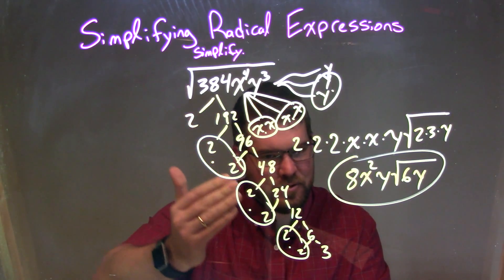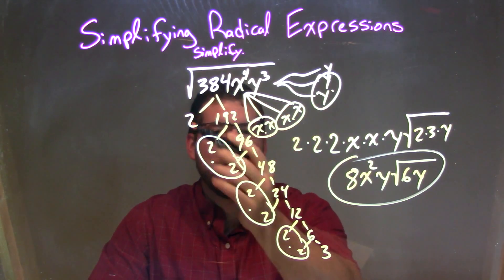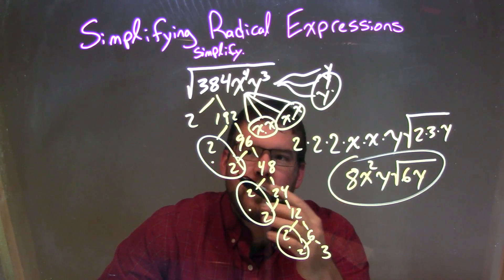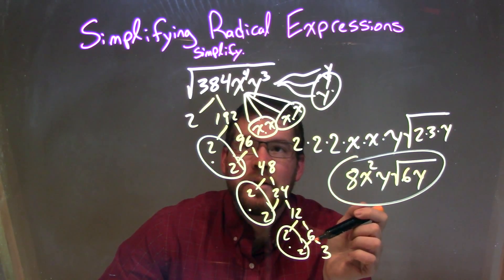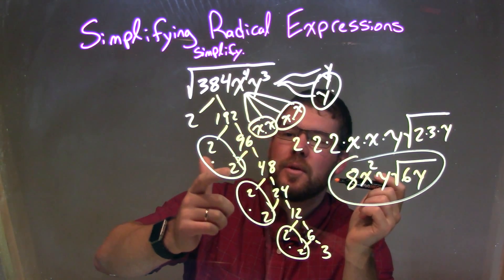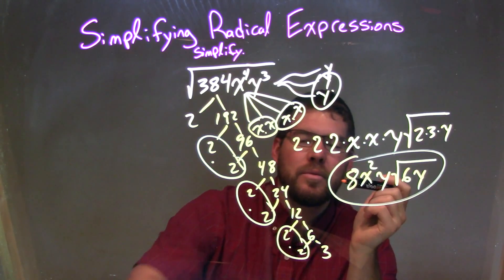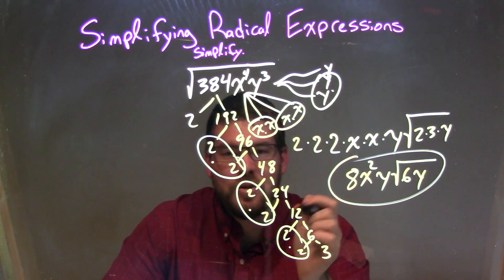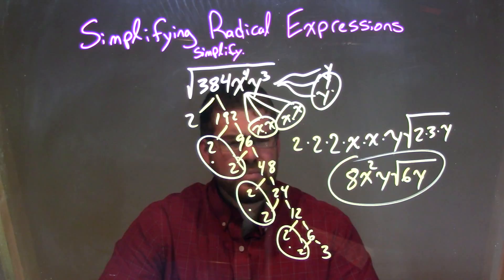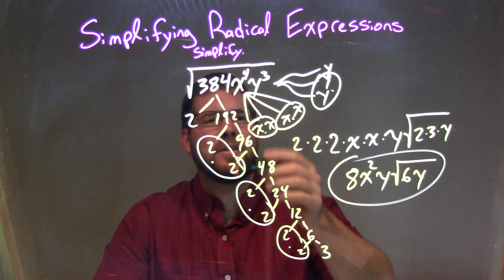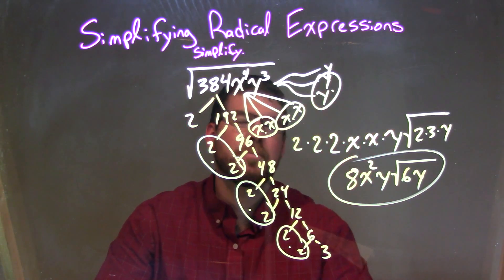I just kept breaking down by 2, all the way down. The prime factorization of 384 is 2 times 2 times 2 times 2 times 2 times 2 times 2 times 3 — a unique set of prime numbers that make 384. Then we broke down x to the 4th into 4 x's, and y to the 3rd into 3 y's.